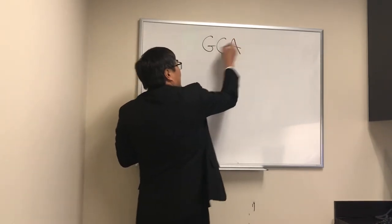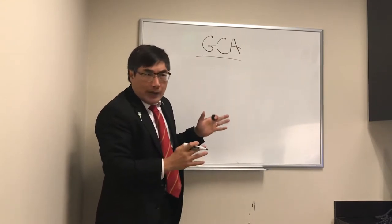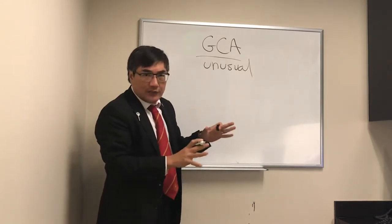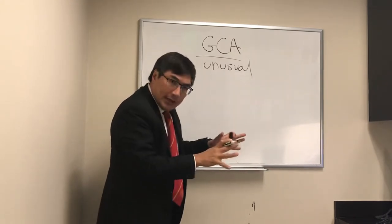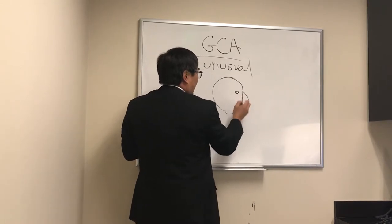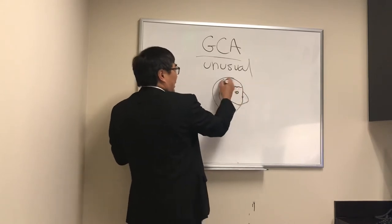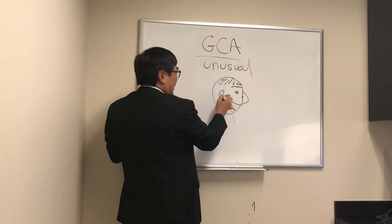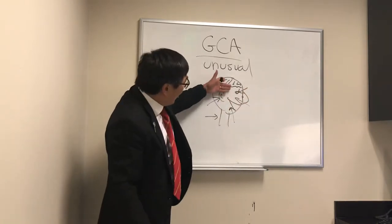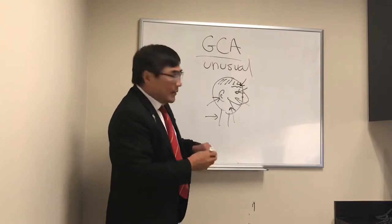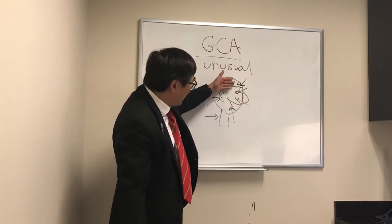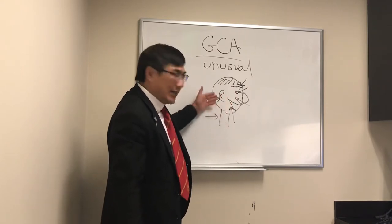We're going to talk about Giant Cell Arteritis, concentrating on its unusual manifestations. Giant Cell Arteritis is a medium to large vessel vasculitis that can affect any artery in the external carotid distribution. In a patient who has Giant Cell Arteritis, they can have pain in their temple, jaw, ear, neck, face, or eye. Even though we call it temporal arteritis — that's where we do the biopsy — the vasculitis can be in any artery in the external carotid distribution, meaning pain can occur in the face, neck, scalp, jaw, mouth, or ear.